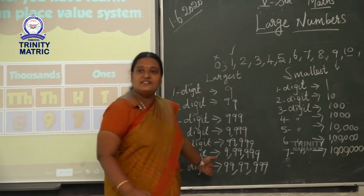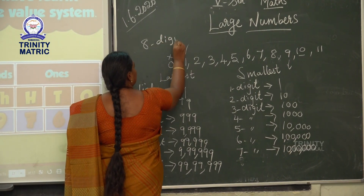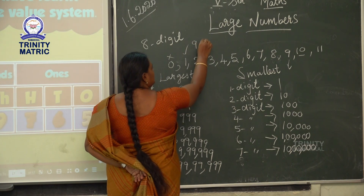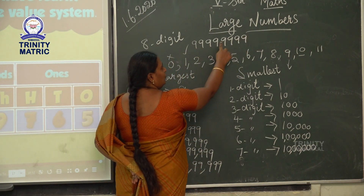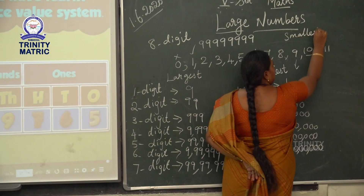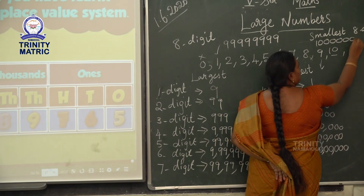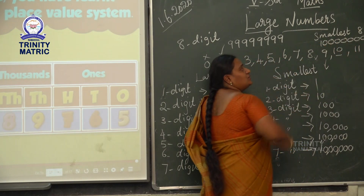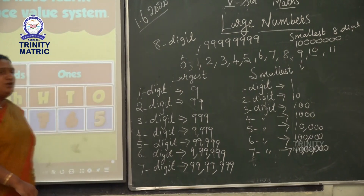In fourth standard we studied up to 7 digits. In fifth standard we are going to study up to 8-digit numbers. The largest 8-digit number is written with eight 9s — count the digits: 1, 2, 3, 4, 5, 6, 7, 8 — that is 9,99,99,999. For the smallest 8-digit number, put 1 and then add 7 zeros: 1, 2, 3, 4, 5, 6, 7, 8 digits — that is 1,00,00,000. This is called 1 crore. In fifth standard we are going to study up to 1 crore.